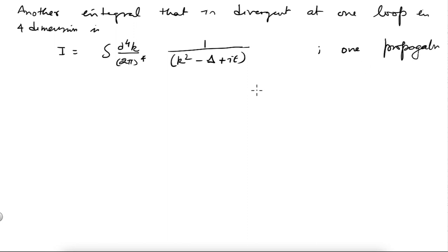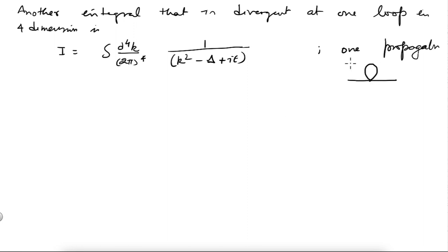If you have more than two propagators — say three or four — then the integral will be convergent, because with three you have 4 powers in the numerator and 6 powers in the denominator. That is why I am interested in only these two integrals. This one-propagator integral comes from self-energy type diagrams.